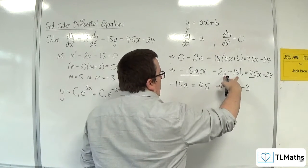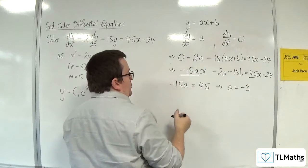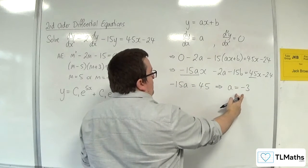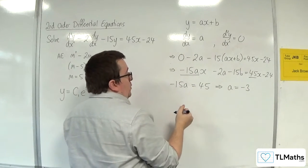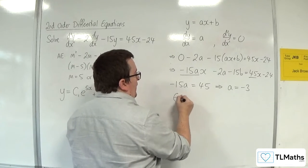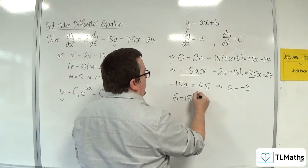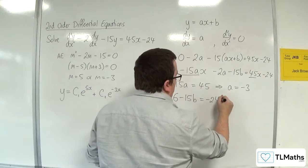Now the -2a - 15b is also going to be equal to -24. But now that I know that a = -3, -2 times -3 is 6. So 6 - 15b has got to be equal to -24.